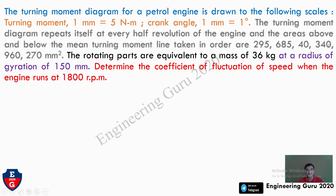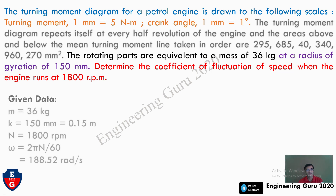The rotating parts are equivalent to a mass of 36 kg at a radius of gyration of 150 mm. We need to determine the coefficient of fluctuation of speed when the engine runs at 1800 RPM. From this, we can find omega: ω = 2πN/60, giving ω = 188.52 rad/s.